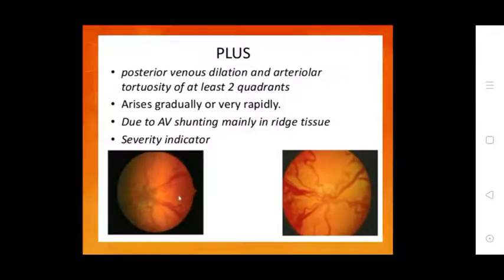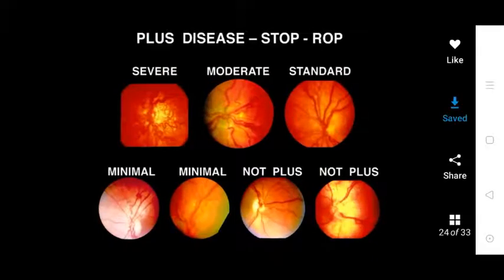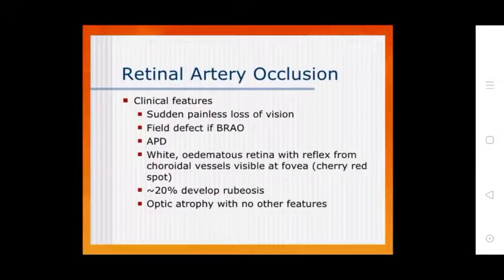Plus disease refers to posterior venous dilation and arterial tortuosity in at least two quadrants, arising gradually or very rapidly due to arteriovenous shunting mainly in the ridge tissue. Plus disease is a severity indicator for ROP. Severity levels range from severe, moderate, standard, minimal, not-plus, to retinal artery occlusion (R.A.O.).